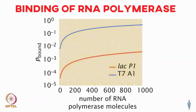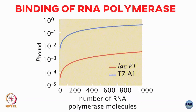It is true that these are very simple calculations, but you can often look at experimental data and get some information about the underlying biological system using these very simple models. One can of course build more and more complicated models, but even these simple models can often be used to interpret real experimental data. We will continue with binding with more biologically complicated models, where you can have multiple ligands and so on.